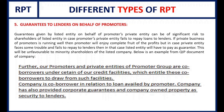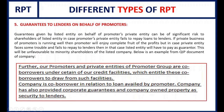The fifth scenario is where promoters have a loan and the listed company provides a guarantee for it. If the promoter's business is going well, no problem. But if something goes bankrupt, the liability falls on the public company because they provided the guarantee. From a QIP document example: the company co-borrowed in relation to a loan availed by the promoter company, and the listed company also provided corporate guarantees and company-owned property as security to lenders.